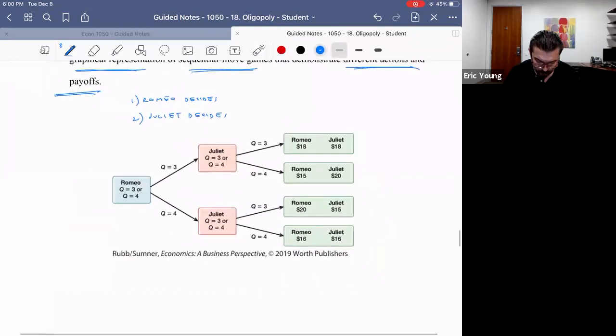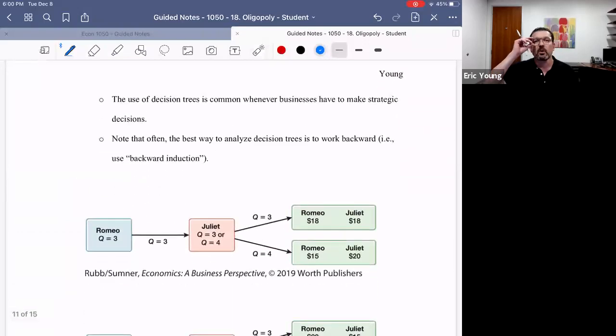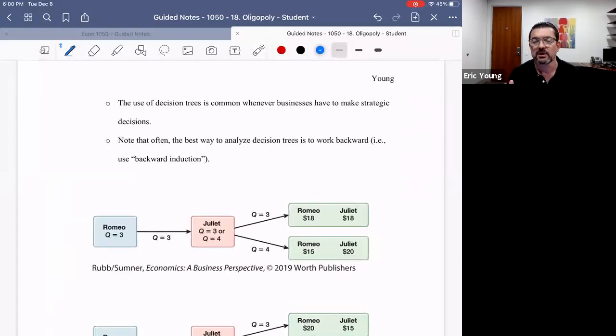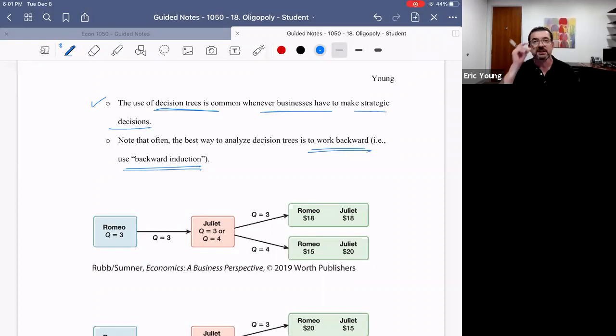So once you understand that, then what you do is you jump into analyzing it. And the critical skill that I want you to take away from this is that when you analyze a decision tree, the best and most effective way to do it—first you have to actually draw out the appropriate tree, but once you've drawn the appropriate tree—the best way to analyze it is to work backward. In other words, you use a tool called backward induction. And this is really powerful because, again, like I said earlier, these decision trees are not just things in econ classes. These are common all over business, all over military, all over courts of law, all over diplomacy, all over personal life. Anytime different entities have to make strategic decisions, you can map them out on a tree, and this can help you think better.